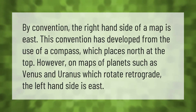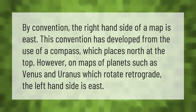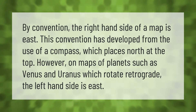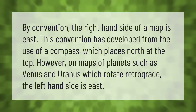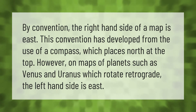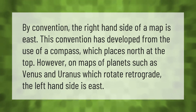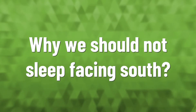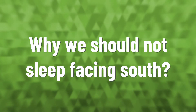By convention, the right-hand side of a map is east. This convention has developed from the use of a compass, which places north at the top. However, on maps of planets such as Venus and Uranus, which rotate retrograde, the left-hand side is east.